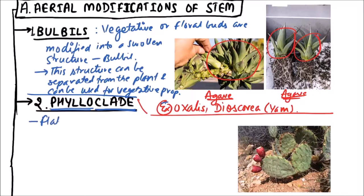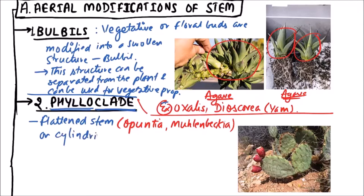So flattened stem that is found in Opuntia and Muehlenbeckia or cylindrical stem which is found in Casuarina and Euphorbia.